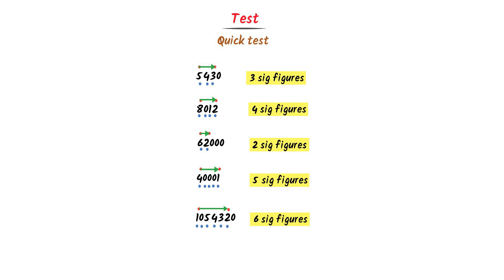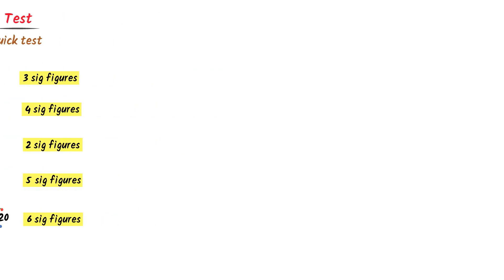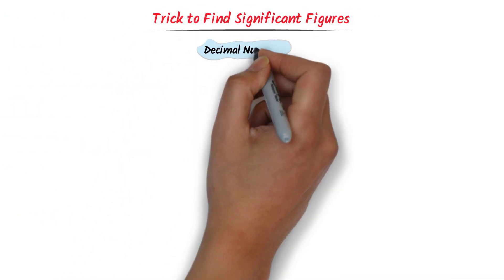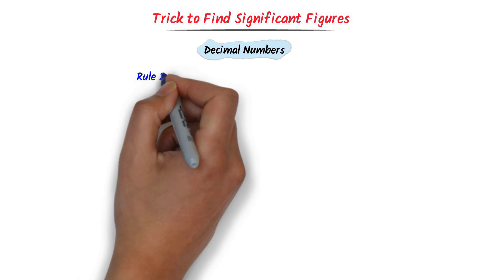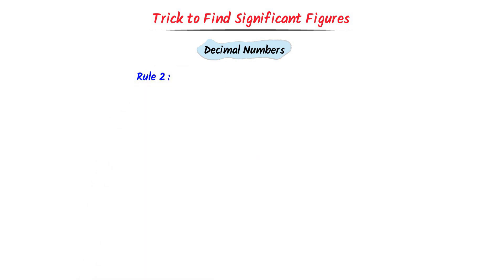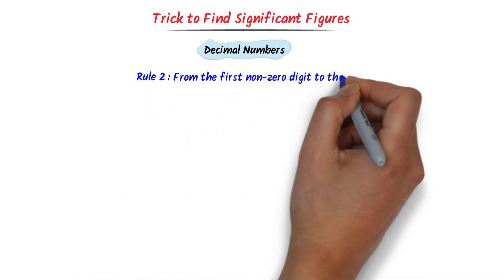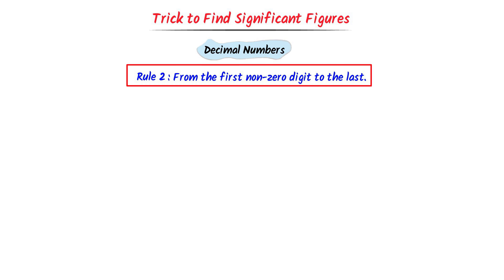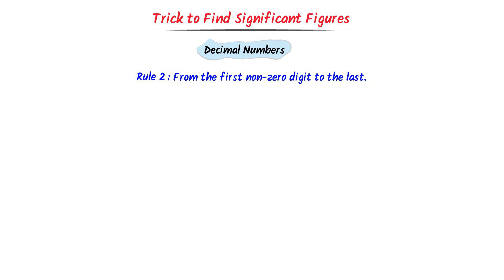Thus, using this trick, we can easily find significant figures in any number. Now we will learn significant figures of decimal numbers. The second rule is: I go from the first non-zero digit to the last. Let me repeat it — I go from the first non-zero digit to the last.